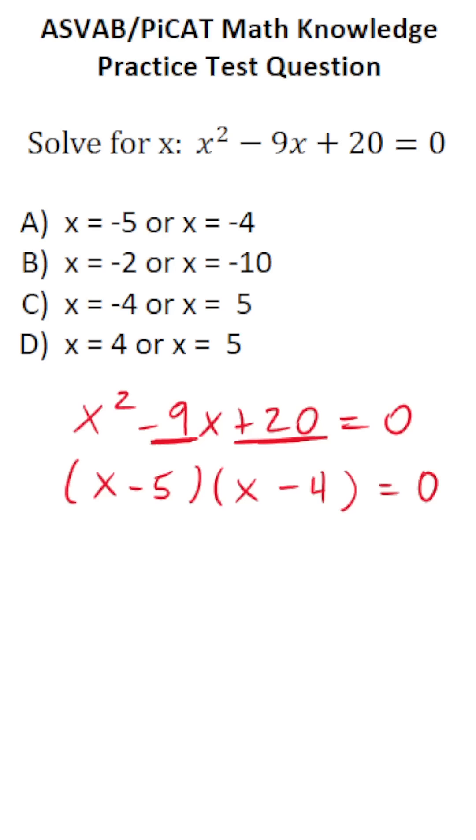So now that we've figured out those two numbers, what we're going to do is take x minus 5, set it equal to 0, and solve it. And x minus 4 and set it equal to 0 and solve it.